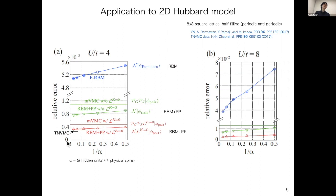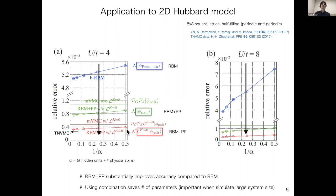This is the benchmark for the two-dimensional Hubbard model on an 8×8 lattice. Here the relative error of the energy is compared to the numerically exact QMC result. The blue one is the RBM result, and the green and red are the combination, where the difference is whether we impose symmetry or not. The combination substantially improves the accuracy, and also saves the number of parameters to obtain the same accuracy, which is very important for large system sizes.